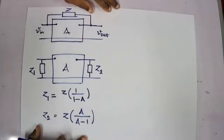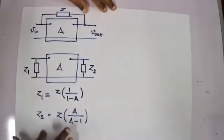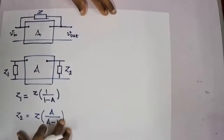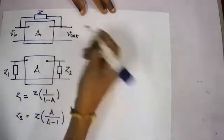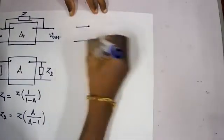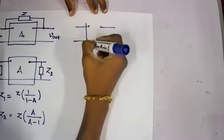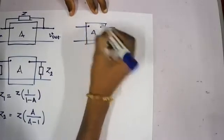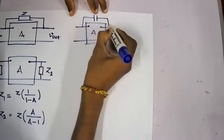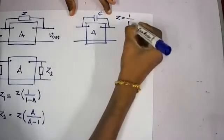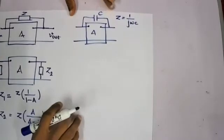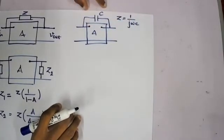But when it comes to an inductor or a capacitor, we need to perform an additional calculation. So let's see how we can use Miller's theorem for a capacitive network or a feedback capacitor. For example, this is the network with a gain of A, and then I have a capacitor here, which is C. So Z equals one over j-omega-C.